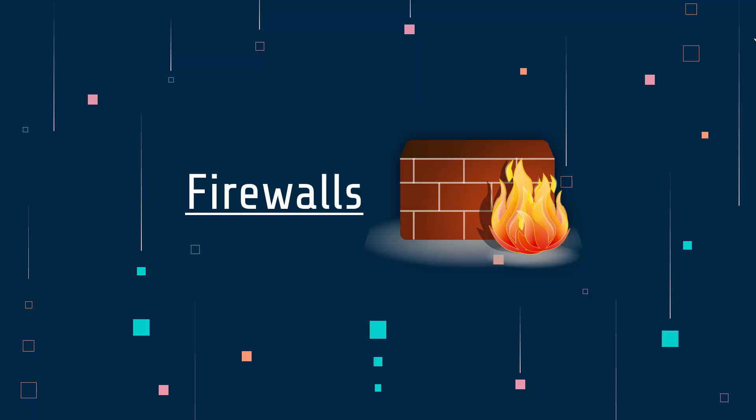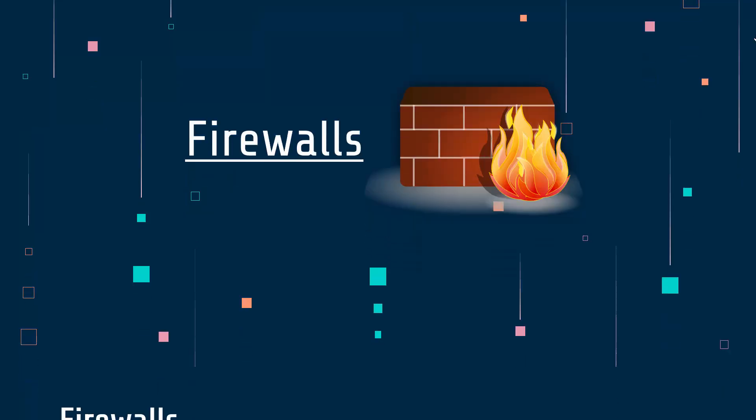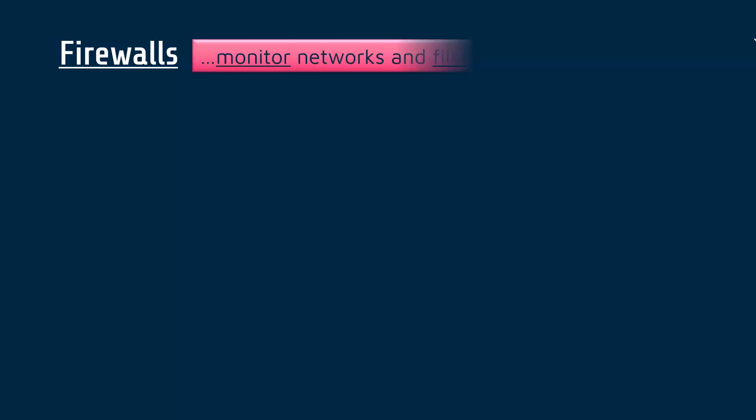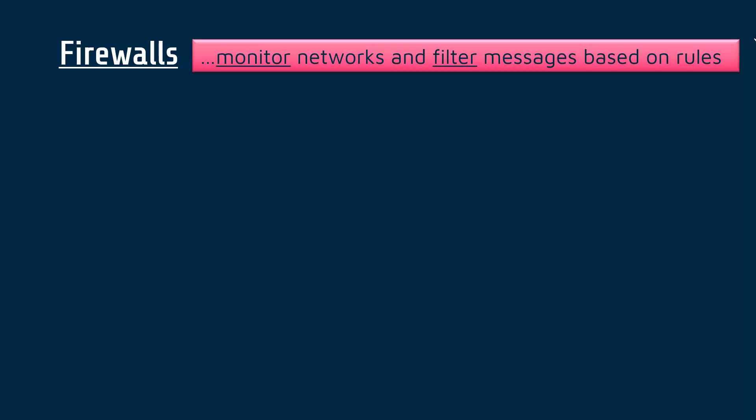Hello, we're going to look at a really common and often misunderstood data-level protection measure, which is a firewall. A firewall is quite a technical measure — we're not going to go into low-level detail here, just what it does and some pros and cons. A firewall is either a device or some software whose purpose is to monitor networks and filter messages sent over these networks based on certain rules determined by the people owning the network.